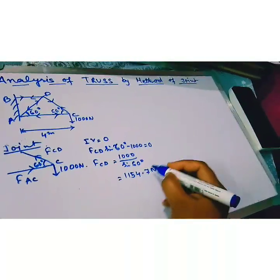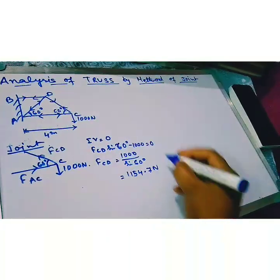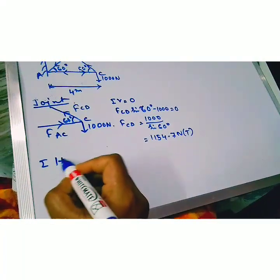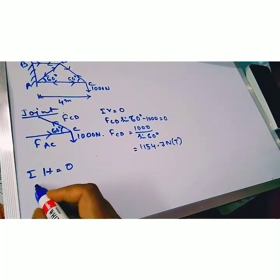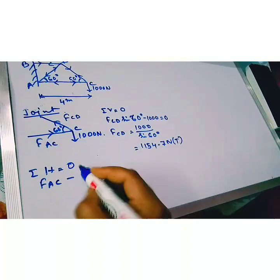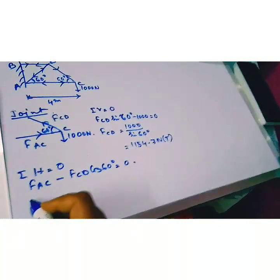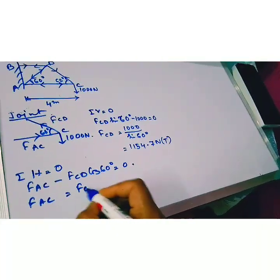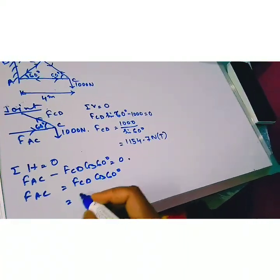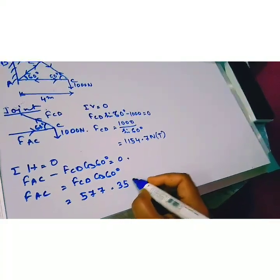The result becomes positive. We assume the member CD is tension member. Summation of horizontal force equal to 0. So FAC minus horizontal component of FCD is FCD cos 60 degree equal to 0. So FAC equal to FCD cos 60 degree. We know the value of FCD. So the value becomes 577.35 newton.